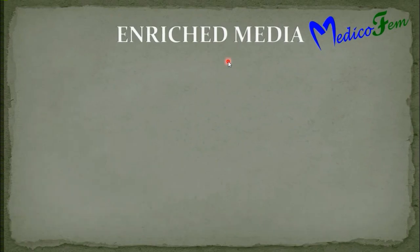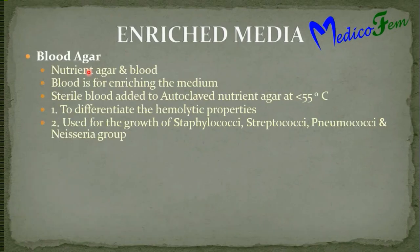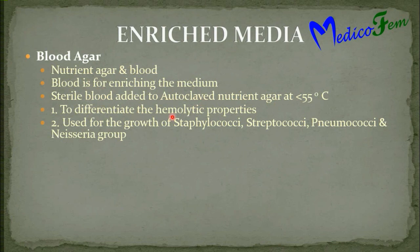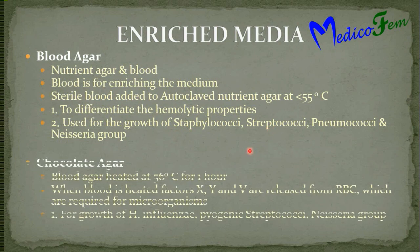Enriched medium: blood agar contains nutrient agar with 5–10% added blood. Blood enriches the medium. Blood agar is prepared by adding sterile blood to autoclaved nutrient agar when the temperature of nutrient agar falls below 55 degrees centigrade. It is used to differentiate hemolytic properties and for growth of staphylococci, streptococci, pneumococci, and Neisseria group.